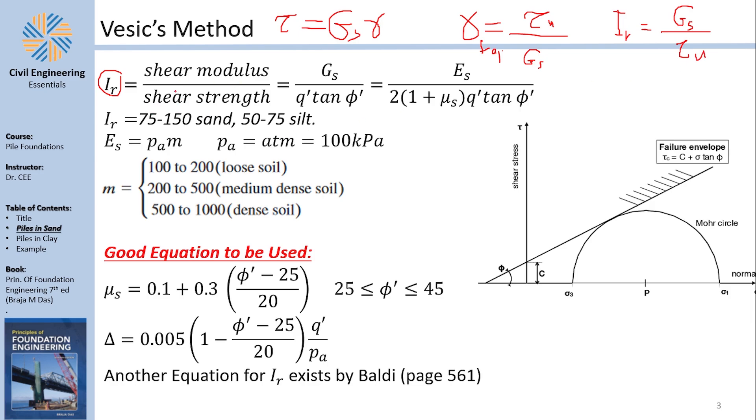If you are at the failure shear, then you would get γ_failure, and γ_failure is τ_ultimate divided by Gs, which means Ir is Gs over τ_ultimate, and that's what you see here. So Ir in this case, for me, basically means the inverse of the shear strain at ultimate. You can see that this equation just transforms like this, but why?